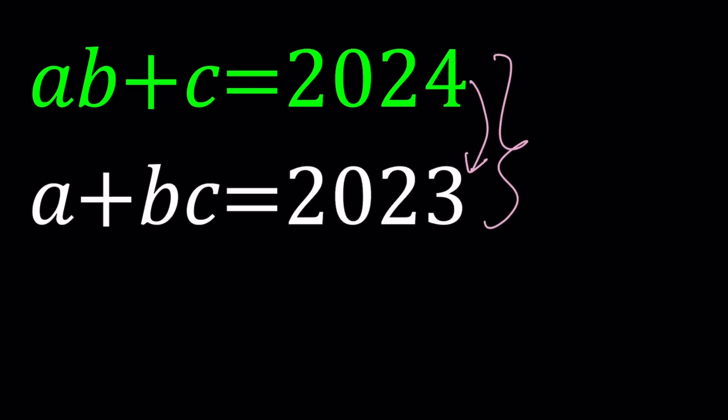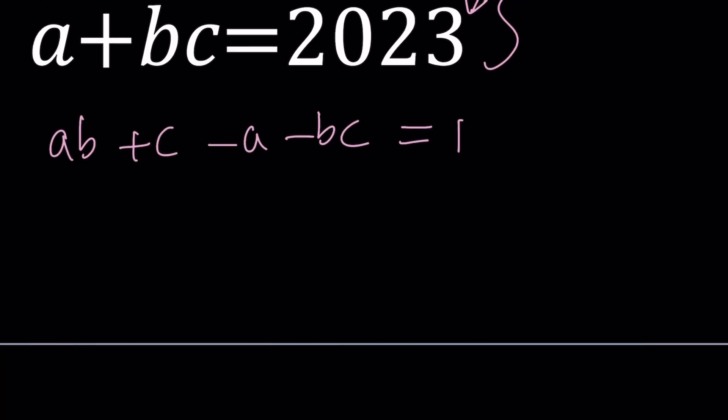We're going to go ahead and subtract these equations. Why? Because their difference is one, and actually getting one is very helpful if you're solving the Diophantine equation, because one can only be factored so much. When you subtract, you're going to get AB plus C minus A minus BC equals 1. Notice that we can group these terms together. AB minus A and then plus C minus BC.